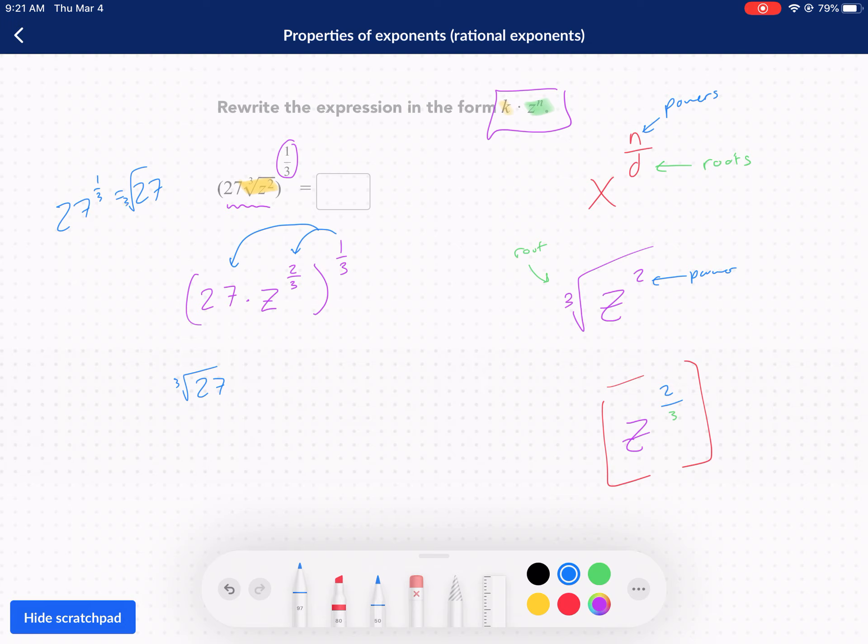So what we're gonna do here is we're gonna take 27, and we're gonna take the cube root of that, or raise it to the one-third. 27 to the one-third power is the same thing as the cube root of 27. Then what we're gonna do here, is we have this z to the two-thirds power, raised to the one-third power. Our property of exponent states that if we have a power raised to a power, we're gonna multiply exponents. So we're gonna do two-thirds times one-third.